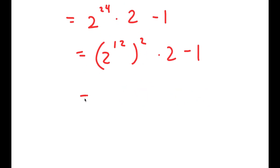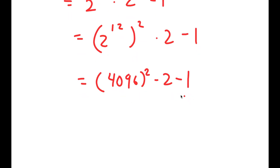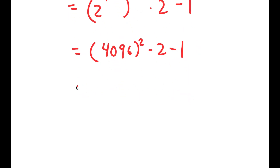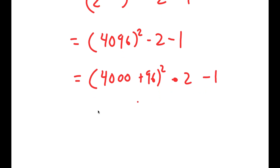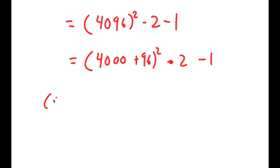Now 2 to the power of 12 is equal to 4096, so I get 4096 squared times 2 minus 1. I can rewrite 4096 as 4000 plus 96 squared. Now if I have something in the form a plus b squared...